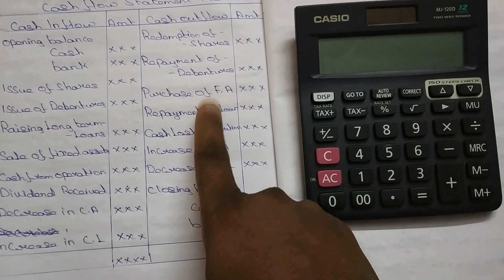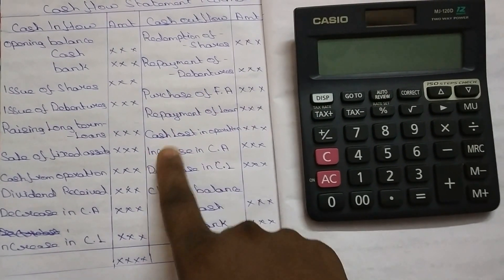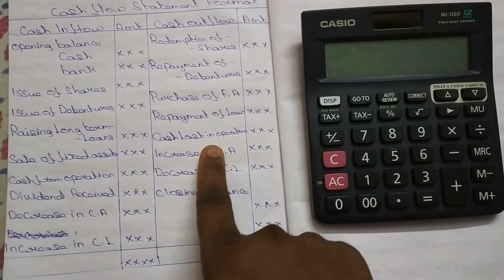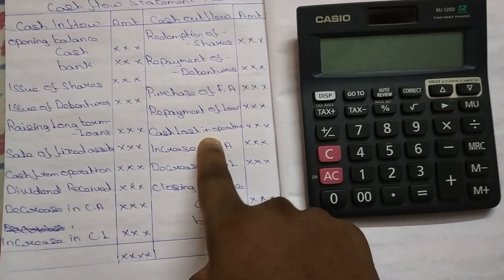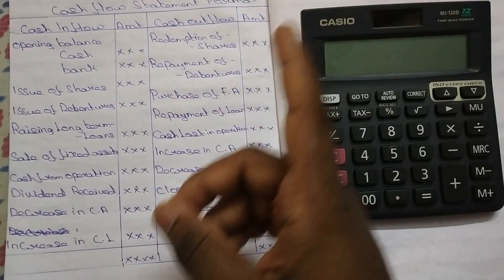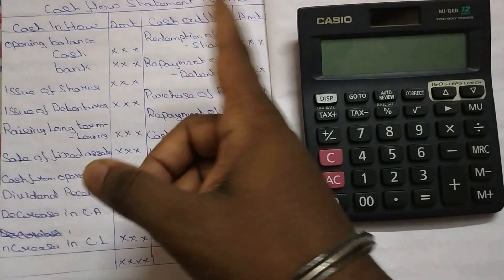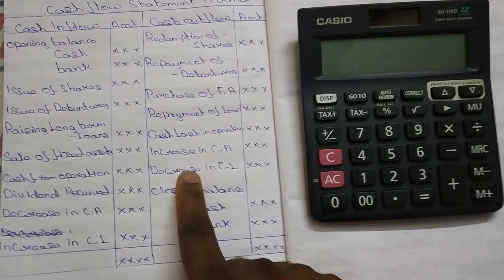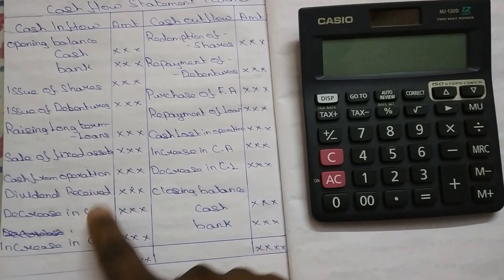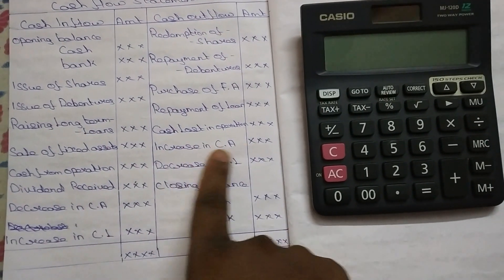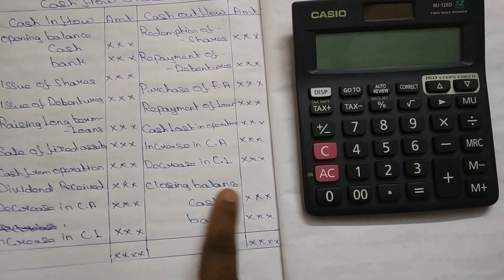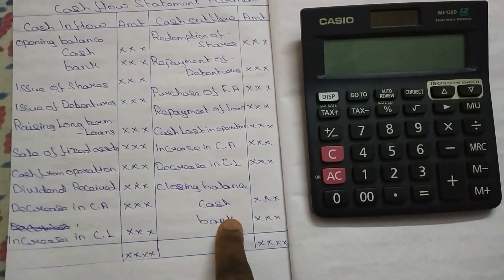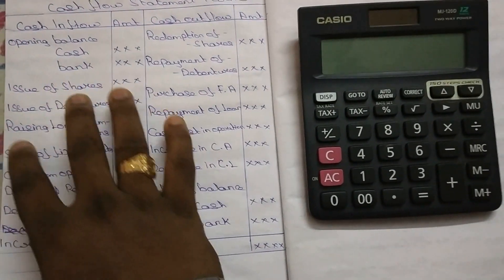Repayment of loan is the cash outflow. Cash lost in operation — we have cash lost in a loss, that is the cash outflow. That is the increase in current asset, decrease in current liability, and closing balance. That is the cash flow statement.